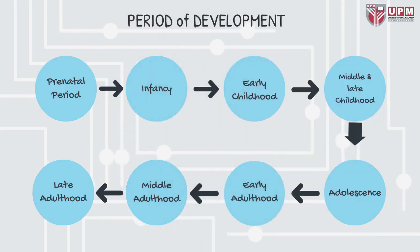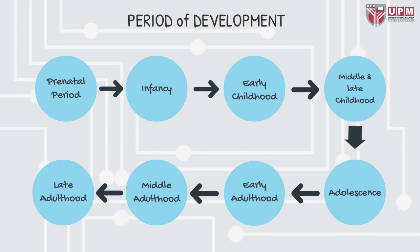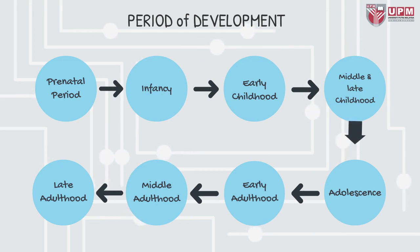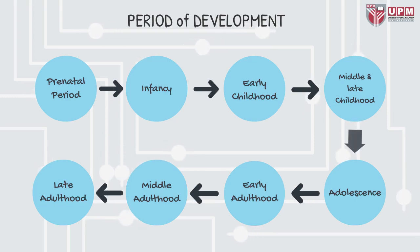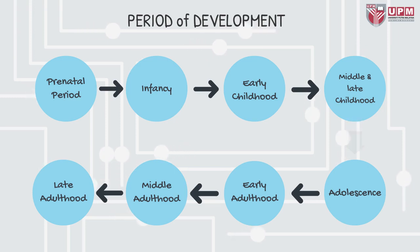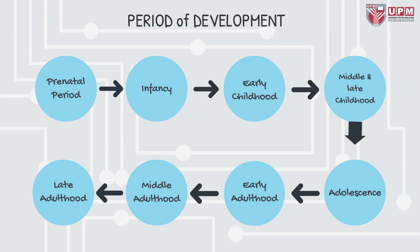Periods of development: First, prenatal period. Second, infancy. Third, early childhood. Fourth, middle and late childhood. Fifth, adolescence. Sixth, early adulthood. Seventh, middle adulthood. Eighth, late adulthood.